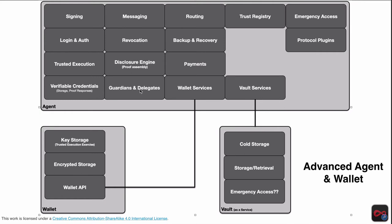We need to also consider guardians and delegates — how do they fit into a wallet? What does it mean if you are a guardian or delegate, or if you have delegated capabilities? Then specifically the wallet services, which come down to key storage and encrypted storage. Keys would include your private keys and the link secret — that kind of information stored in the trusted execution environment — and then using those keys we store the actual credentials, digital receipts, and so on, all following some kind of wallet API.